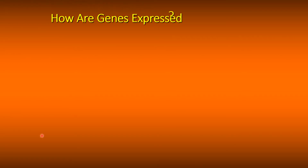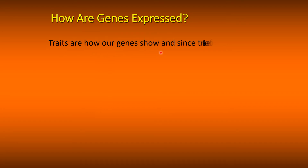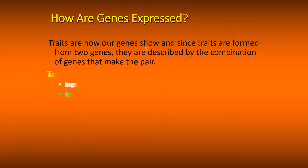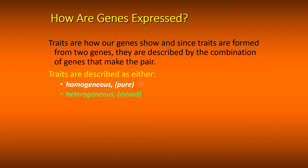How are genes expressed? Traits are how our genes show, and since traits are formed from two genes, they are described by the combination of genes that make the pair. Traits are described as either homozygous (pure) or heterozygous (mixed).